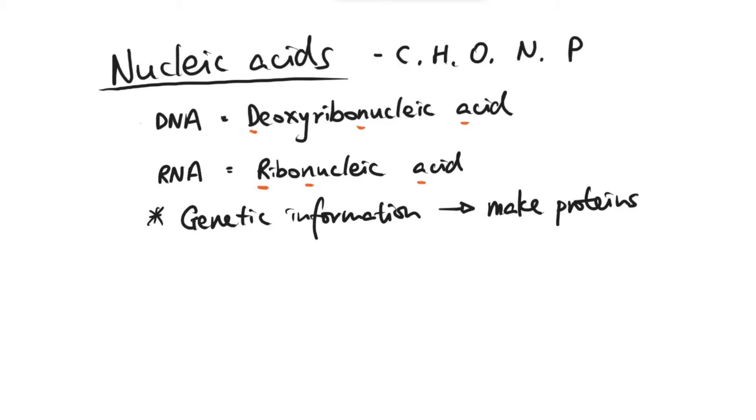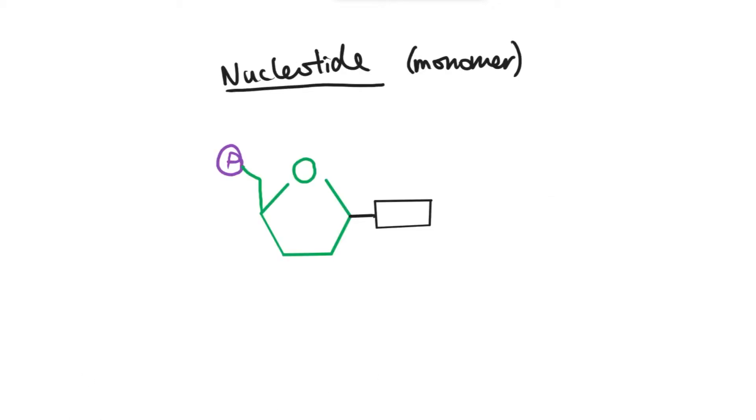So now let's have a look at the actual structure of the monomer of a nucleic acid, so the simplest group of a nucleic acid. Let's look at the structure of a nucleotide which is the monomer, the simplest thing that makes up any nucleic acid. It's mainly made up of three parts here as you can see.